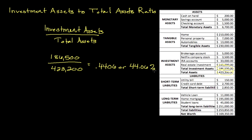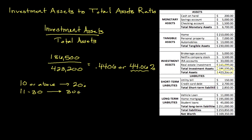The first question you probably have is: what does this actually mean — is this good or bad? There are some general gauges from financial advisors. A score of 10% or above is considered good if you're in your 20s. A score of roughly 11 to 30% is generally good for people in their 30s. A score of 31% or above is generally appropriate once you're in your 40s and over.